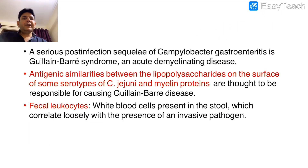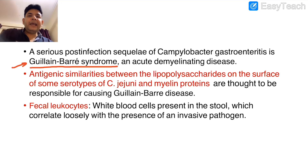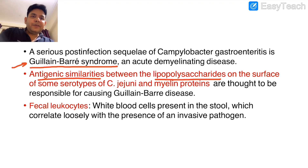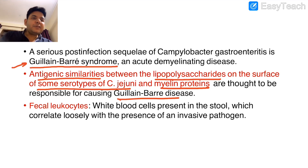The most important association is Guillain-Barré syndrome. Campylobacter jejuni causes Guillain-Barré syndrome because there is antigenic similarity between the LPS of some serotypes of Campylobacter and myelin proteins. This is similar to how Streptococcus shows cross-reactivity with the heart — the same mechanism applies here, causing Guillain-Barré disease.